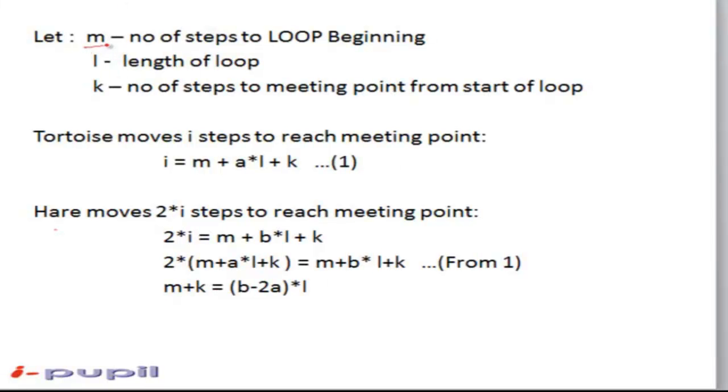Let m be the number of steps to the beginning of the loop. Let l be the length of the loop and k be the number of steps to meeting point from the starting of loop.